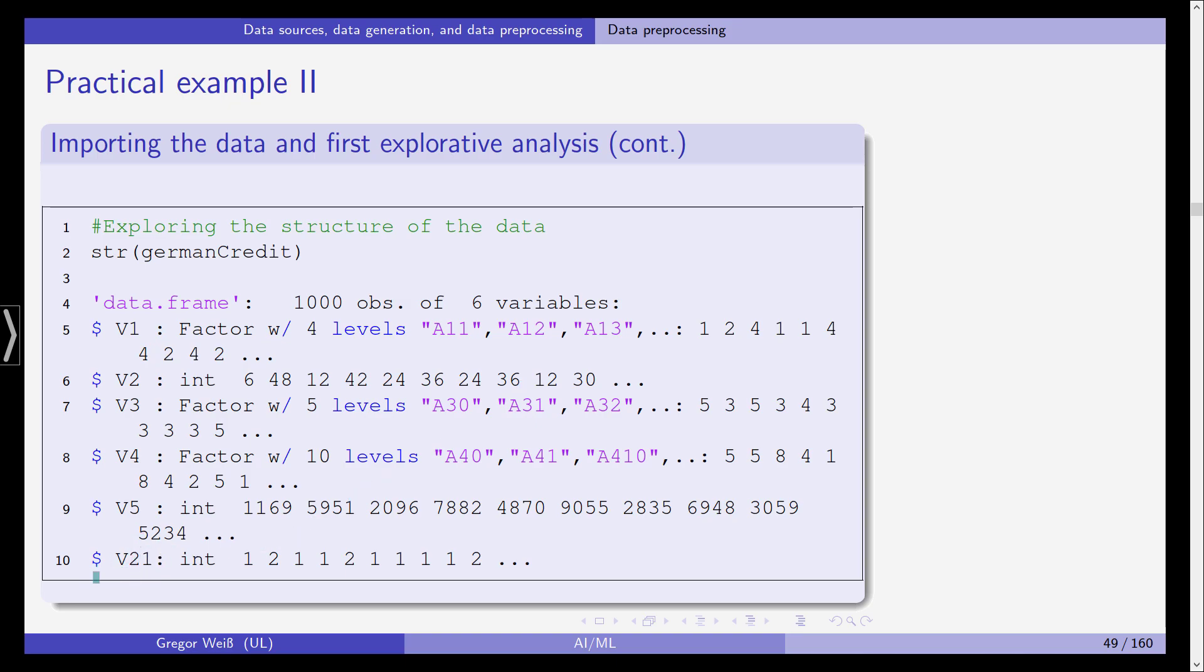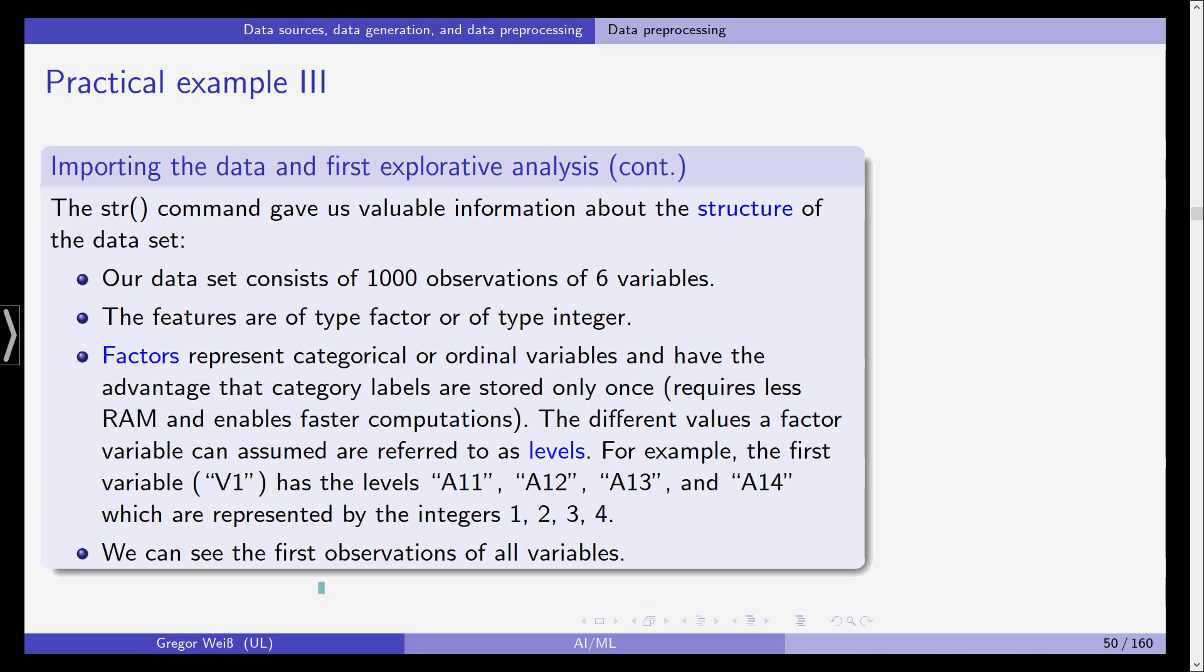V2 is an integer with 6, 48, 12 and so on as first values. V3 is again a factor with five levels. V4 is a factor with 10 different levels. And most interestingly, for V21 we have an integer that seems to only take on the values 1 and 2. It's probably a dummy variable but it doesn't have good coding, so we'll later have to switch that.